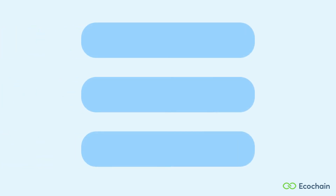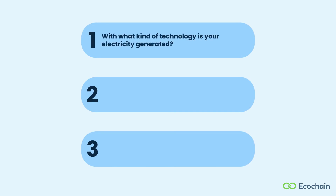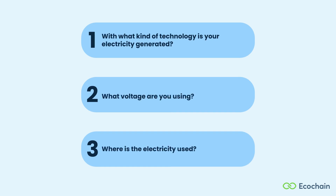To find the right electricity dataset, consider the following questions: Do you know what kind of technology your electricity is generated with? Do you have any idea what voltage you are using? And where is the electricity being used? In this video, I'll help you answer these questions and use the answers to find the most suitable dataset.